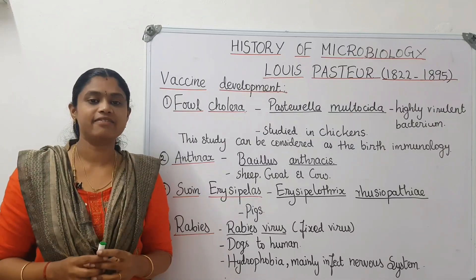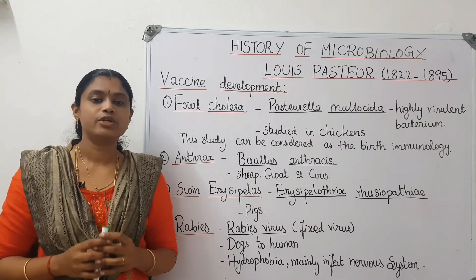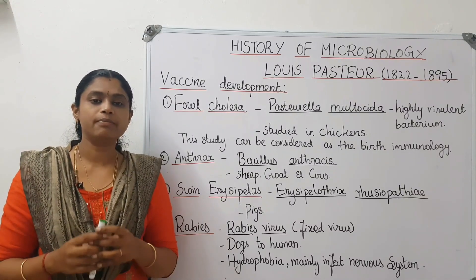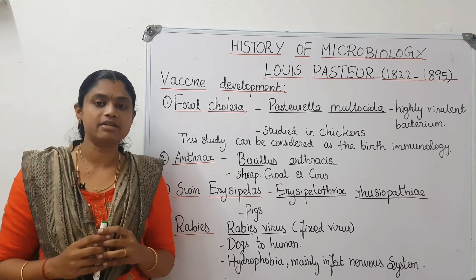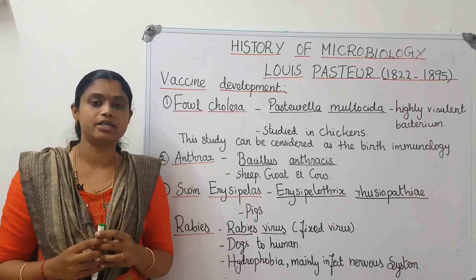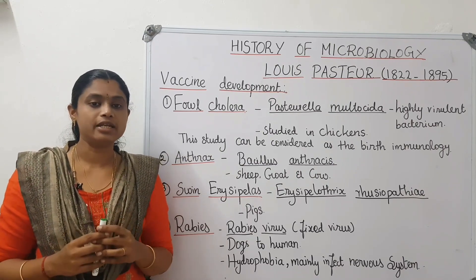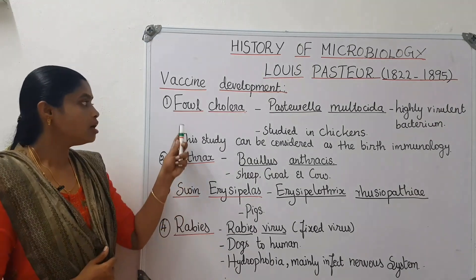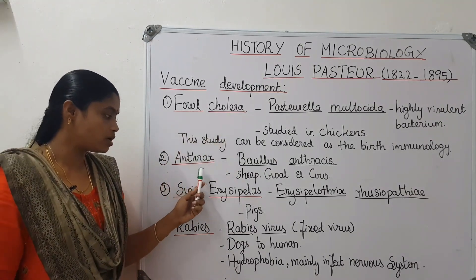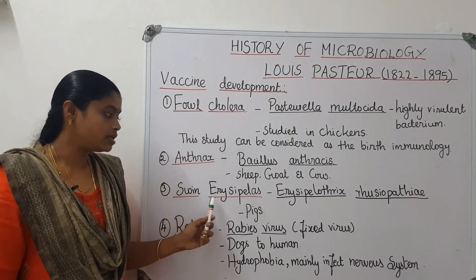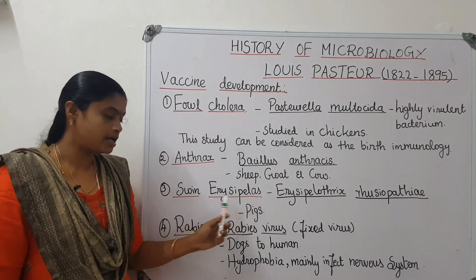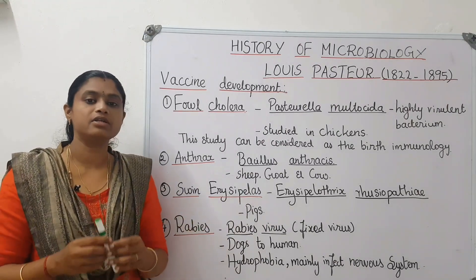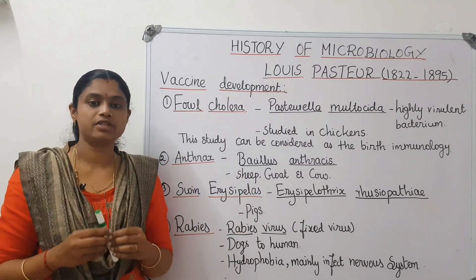Next is vaccine development. Louis Pasteur developed vaccines for four main diseases: fowl cholera, anthrax, swine erysipelas, and rabies.